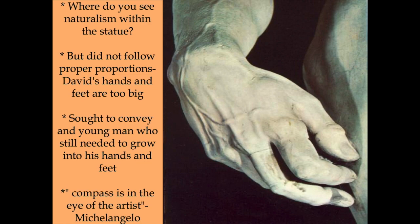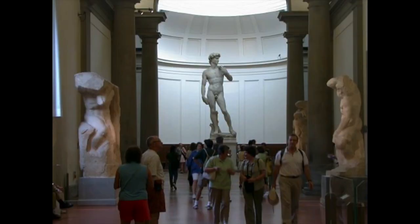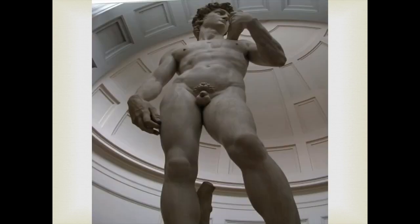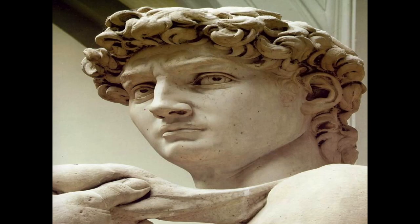The veins in the hands further convey that this is a young adult not yet fully grown. If you visit the Florentine museum where it's housed, the sculpture sits on a high pedestal — from pedestal to top it's 18 feet, with the sculpture of David himself being 13 feet. The pitting you see on the marble's surface is from acid rain, as it stood outside for a very long time before being moved inside within the last 50 years.